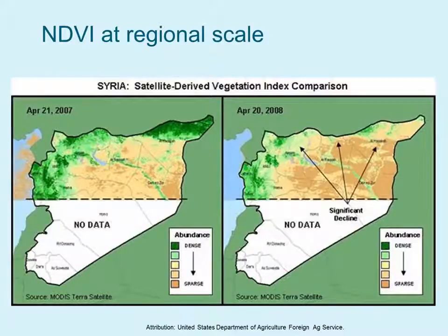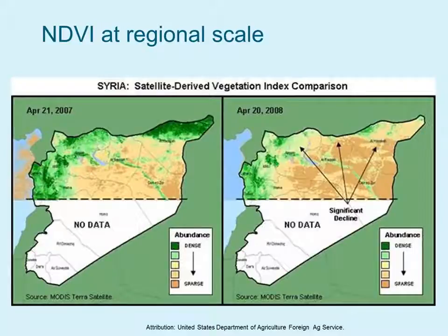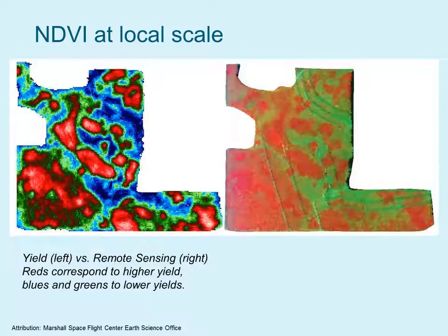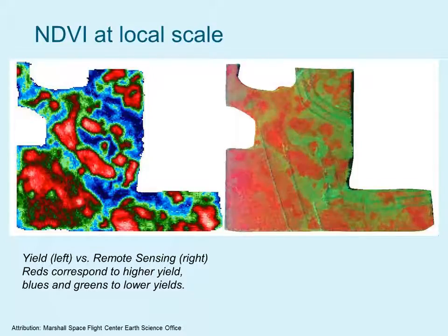We can also use NDVI at various scales, from global to regional scale. This is an example of looking at NDVI for parts of Syria — comparing 2007, when there was significantly more greenness in the northern parts of Syria, to 2008, when there was significantly less greenness. We can also look at NDVI at the local scale. In these two images, red corresponds to higher crop yields while blue and green correspond to lower crop yields.